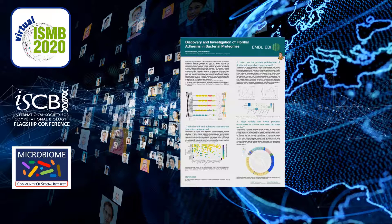These stalk domains can be seen as fibrils on the bacterial surface. The stalk is assumed to project the adhesive domain away from the bacterial surface. You can see examples of fimbrial adhesins from Staphylococcus aureus in the concept figure on the left side of my poster.